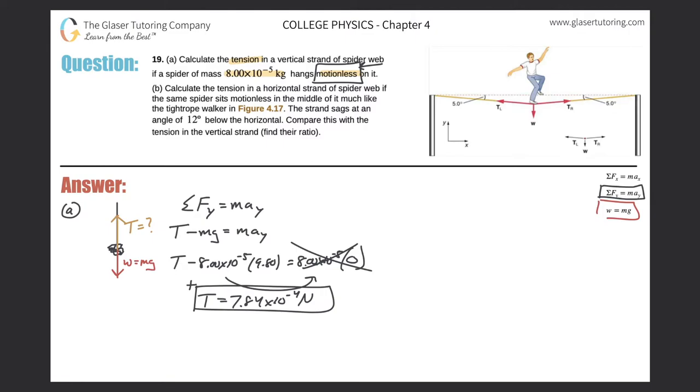Alright. Not bad. Now let's take a look at letter B. So let me draw B over here and let's take a read. So now it says letter B. Calculate the tension in a horizontal strand of spiderweb if the same spiderweb sits motionless in the middle of it, much like the tightrope walker in figure 4.17. The strand sags at an angle of 12 degrees below the horizontal. Compare it with the tension in the vertical strand.